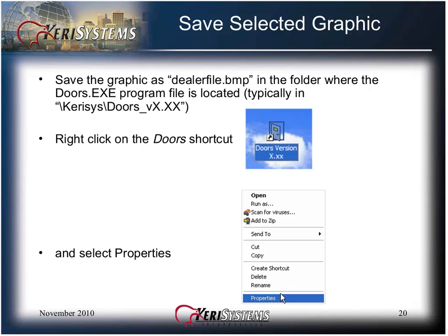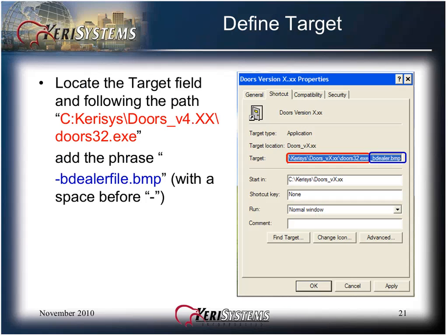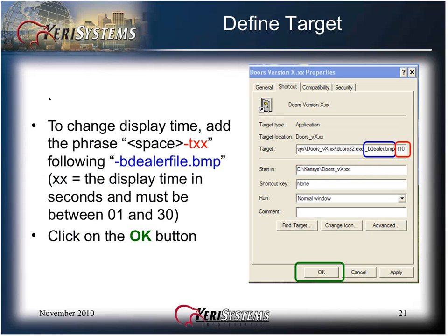In order to save this dealer file, right click on the DOOR shortcut icon on your desktop and select Properties from the list that appears. Locate the target field in the shortcut properties window. At the end of the path line, add the phrase without the quotation marks: space dash b dealer file dot bmp. To change the default display time from 15 seconds to some other value, at the end of the target line, add the phrase space dash txx, where the x's represent the number of seconds that the dealer splash information will appear on the screen. The value of seconds must be between 1 and 30. Then click the OK button.